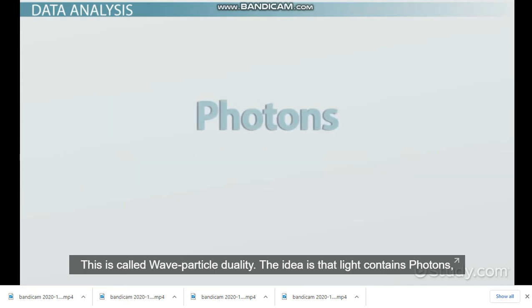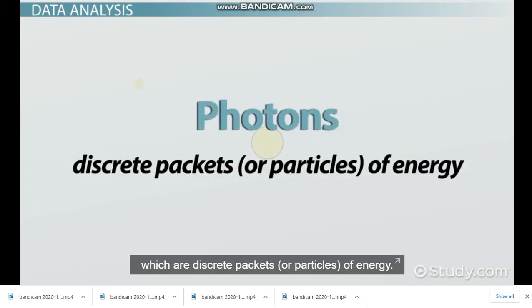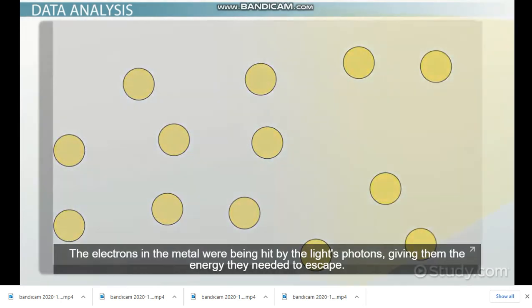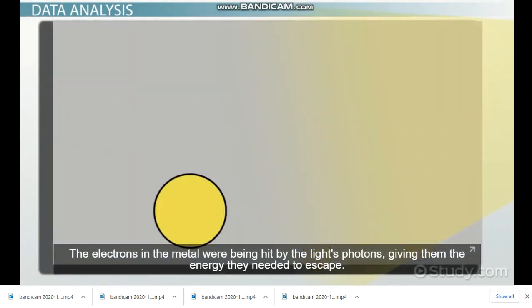The idea is that light contains photons, which are discrete packets or particles of energy. The electrons of the metal were being hit by the light's photons, giving them the energy they needed to escape.